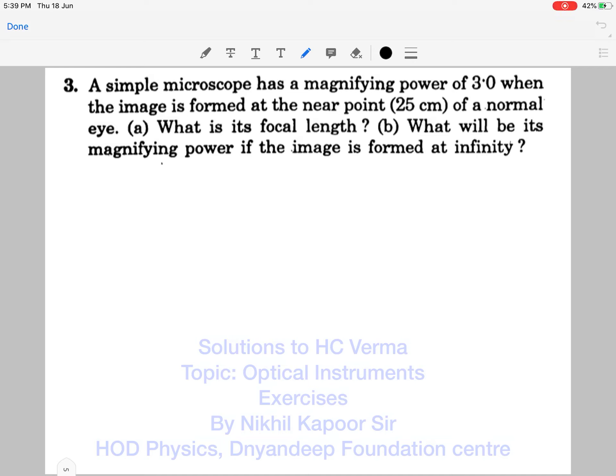This is the third question from the exercise on optical instruments topic of HC Verma. So let's start with the solution. It is said that a simple microscope has a magnifying power of 3 when the image is formed at the near point, that is D (25 cm). What is the focal length?